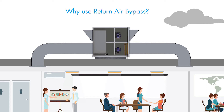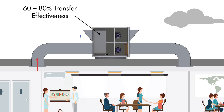To explain why Return Air Bypass mode is used, we need to point out that ERV and HRV units are not 100% effective. Typically they can transfer 60-80% of the heat or energy. So while they do a good job of minimising an outside air load, they are not as efficient as directly reducing or eliminating a fresh air volume itself, if a particular scenario allows it.